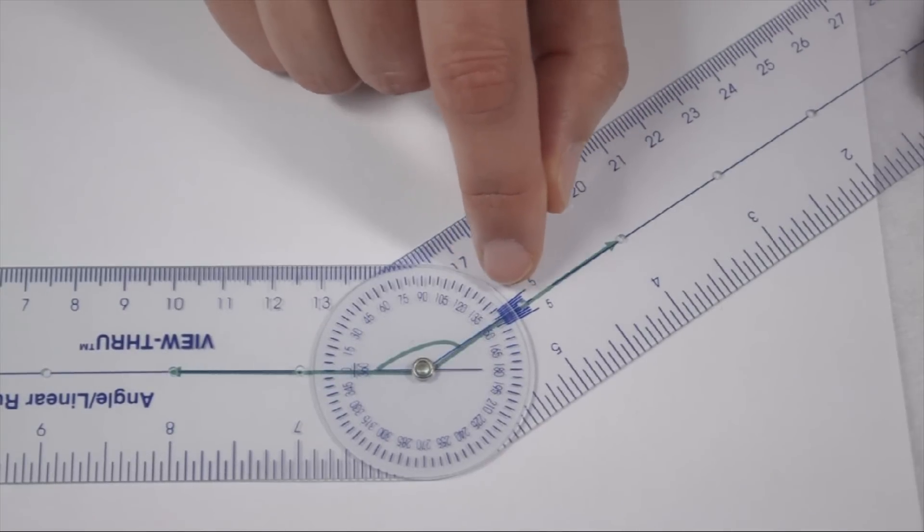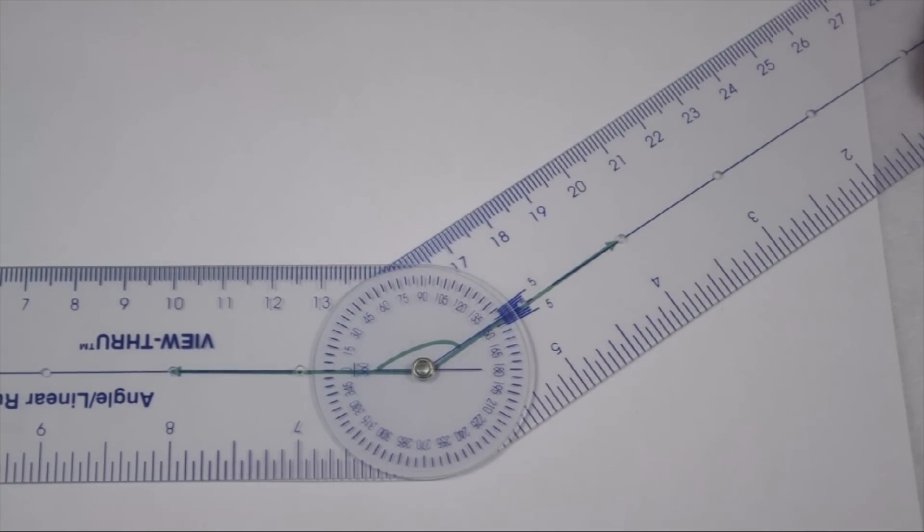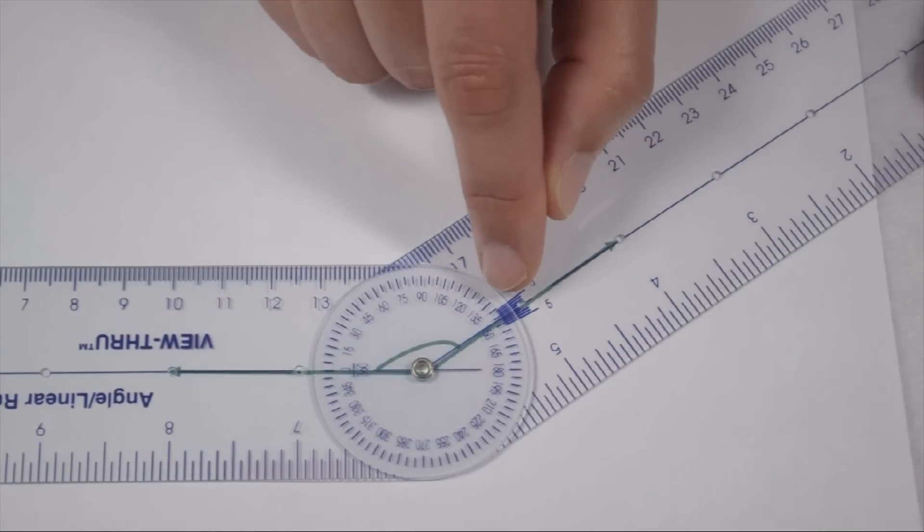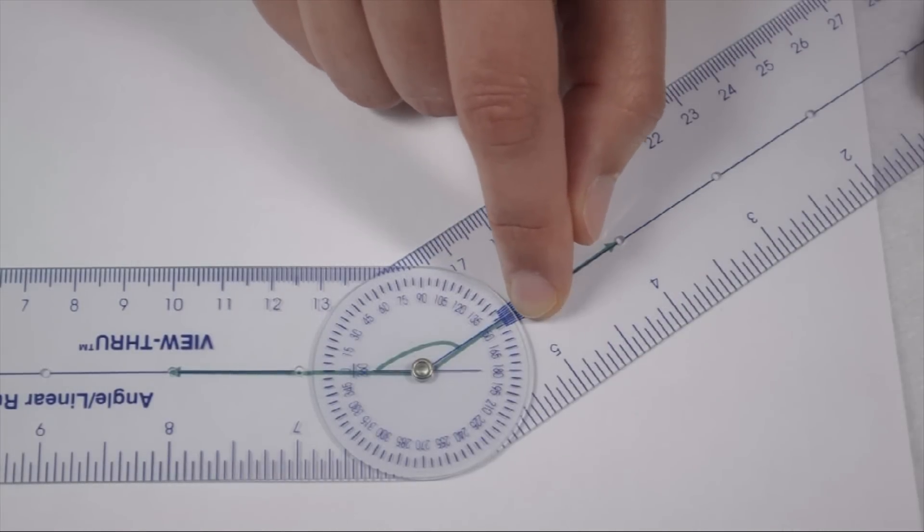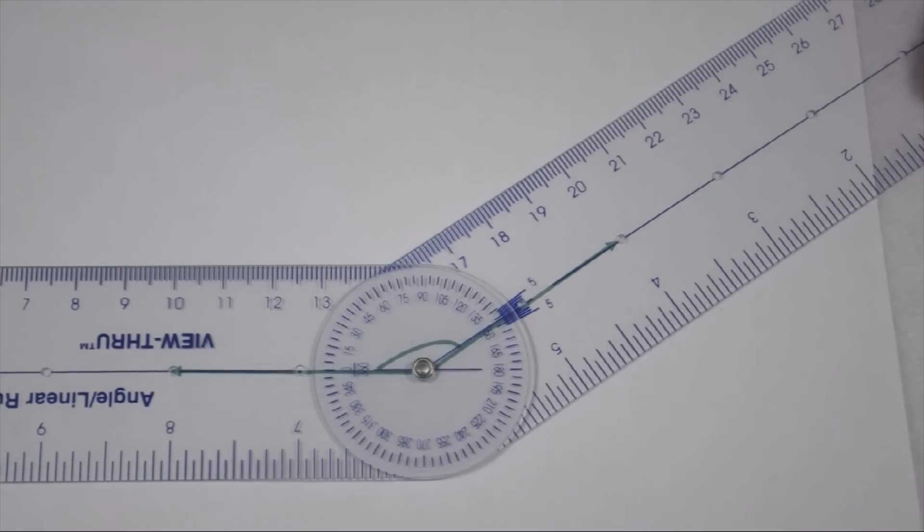Each mark is labeled at every 15 degrees. Since there's two marks in between, we know each of those is worth 5 degrees. So here's 135, 140, so this angle crosses at 145 degrees.